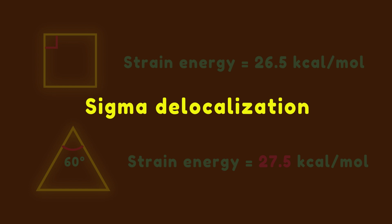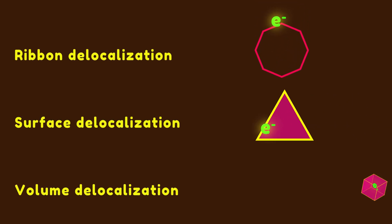The most peculiar property of cyclopropane is sigma delocalization. Before turning into the discussion, it is useful to clarify the different types of delocalization. Taking into account that electrons can delocalize in various ways, there are three modes of delocalization: ribbon delocalization that exists in large rings, surface delocalization in small rings, and volume delocalization in cage compounds. As you see, electrons in cyclopropane can distribute on the surface of the ring, but how is it possible?